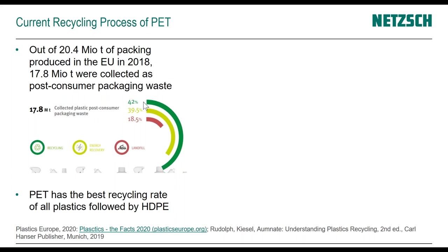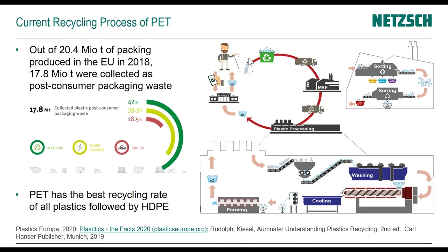How does the recycling process for PET look? We start with the consumer discarding it. It's collected through systems like the green dot system and brought to a material recovery facility where paper, glass, metal, and plastics are sorted out — and ideally, specific plastics like PET are separated. That material is then brought to a plastics processing facility. Sometimes the sorting is done at a recycling facility, sometimes at producers, where original products are shredded, washed, cleaned, and fed back into the manufacturing process to produce new products, such as a yogurt cup.